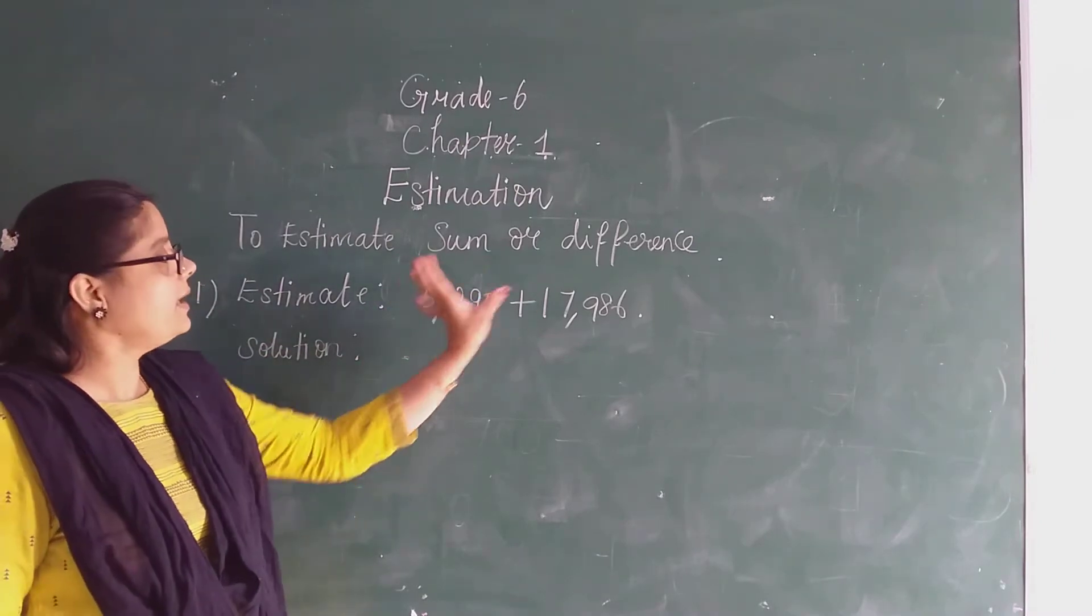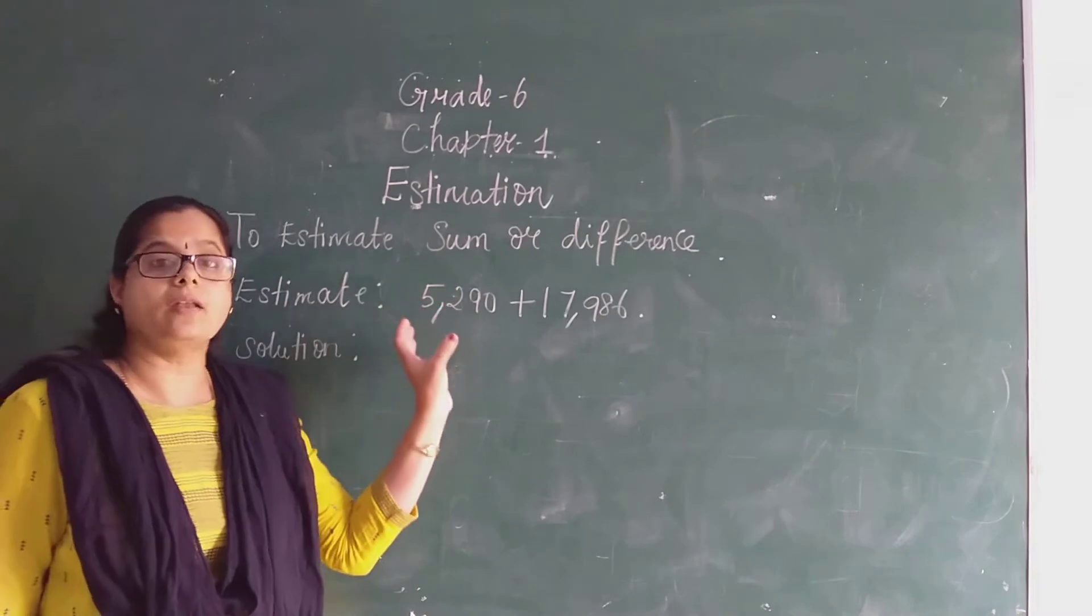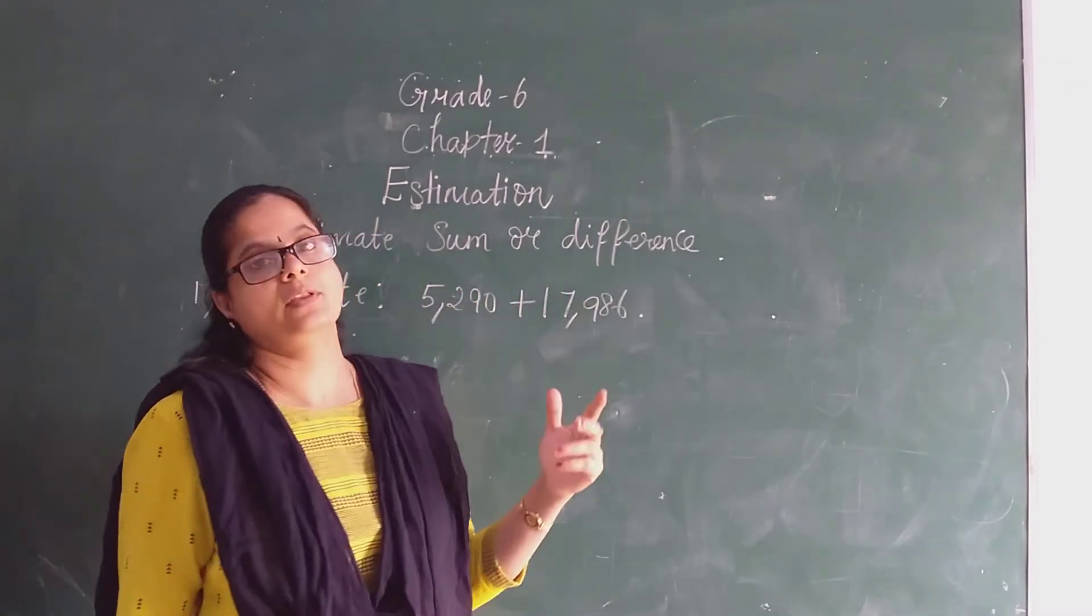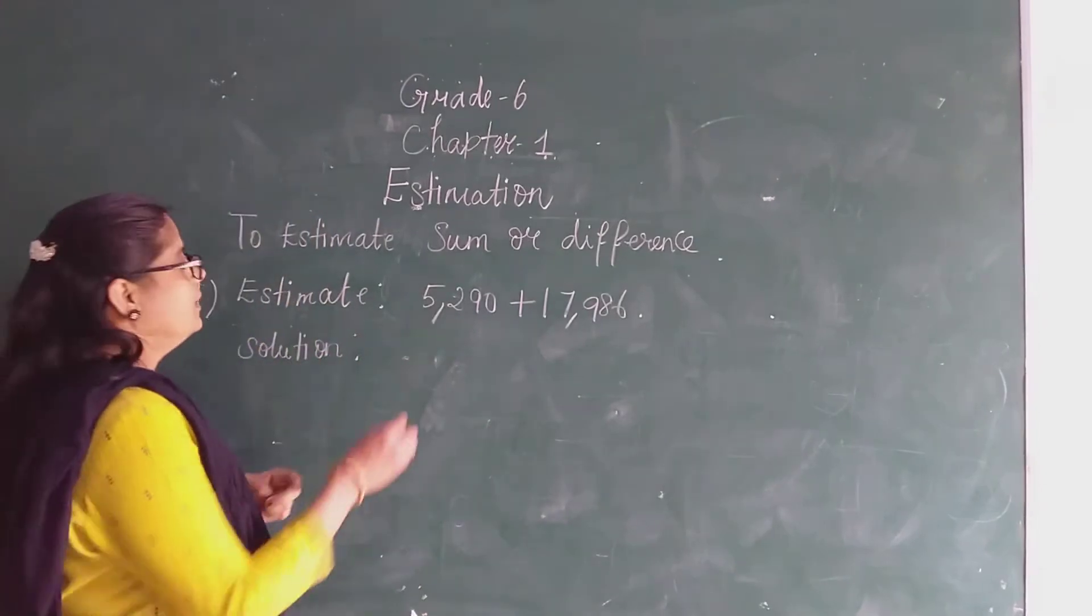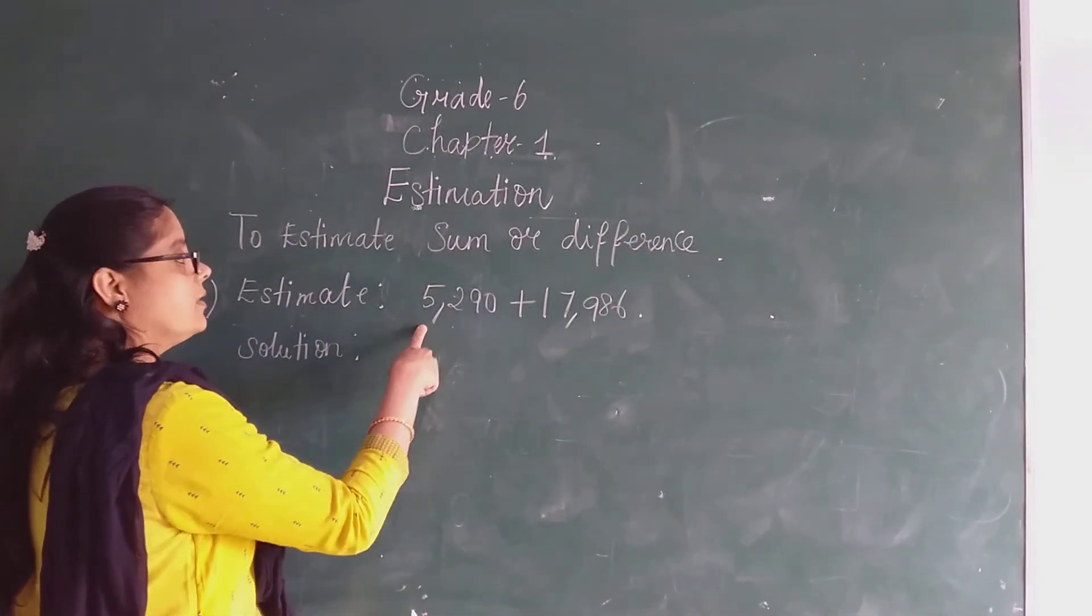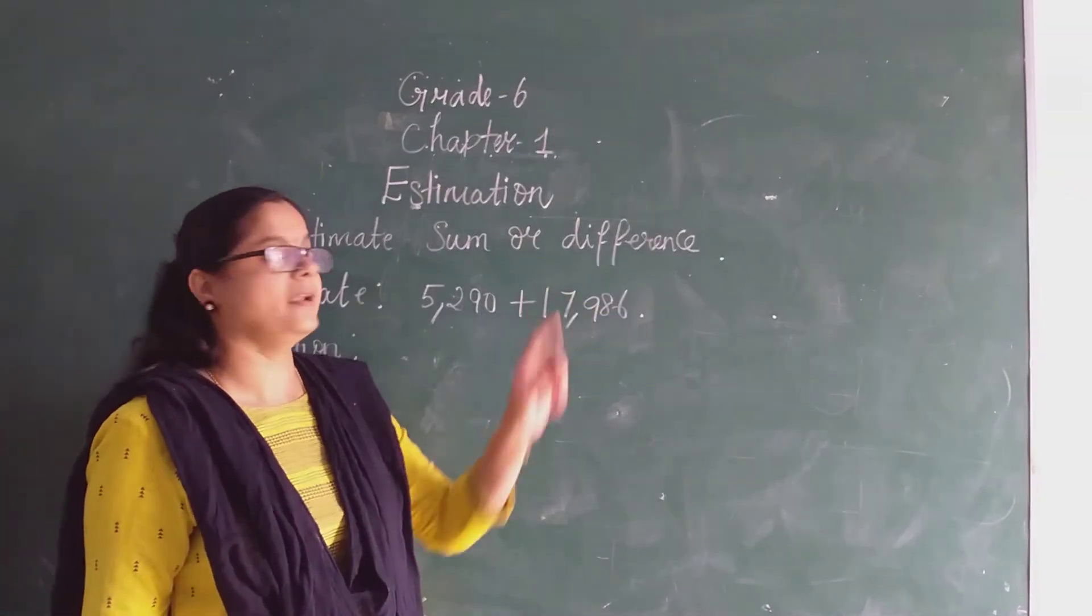We should estimate each and every number individually. That is, we should round it off - rounding off - then we will do the addition. See here, the first number is 5,290, here it is 17,986.